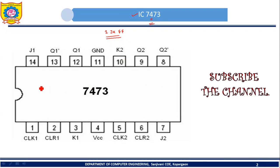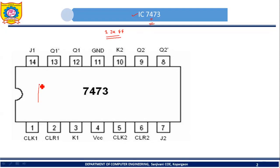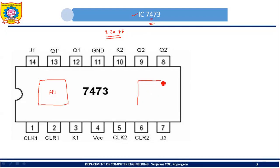Let's assume that here we have the first JK flip-flop. Let's label it as flip-flop 1. And here suppose we have the second JK flip-flop. Let's label it as flip-flop 2.